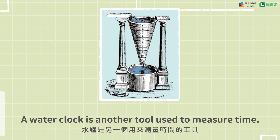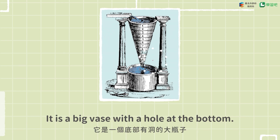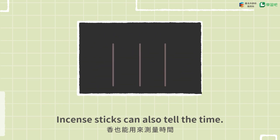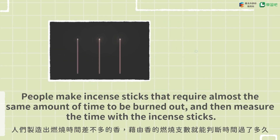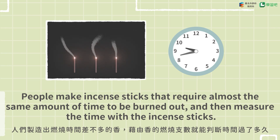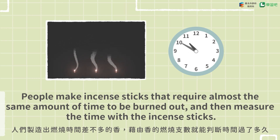A water clock is another tool used to measure time. It is a big vase with a hole at the bottom. One can tell how much time has passed by the amount of water passing through the hole. Incense sticks can also tell the time. People make incense sticks that require almost the same amount of time to be burned out, and then measure the time with the incense sticks.